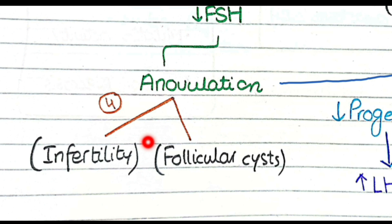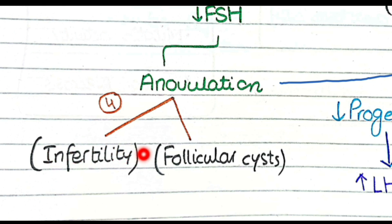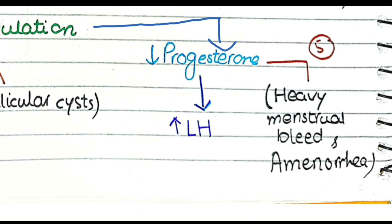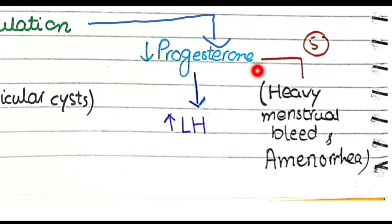Polycystic ovarian syndrome causes anovulation due to the lack of FSH. Because ovulation does not happen, this results in infertility — another important feature. Follicular cysts will also be found in a patient of polycystic ovarian syndrome.